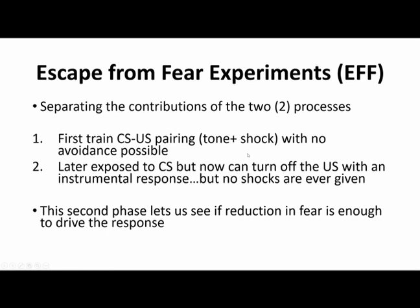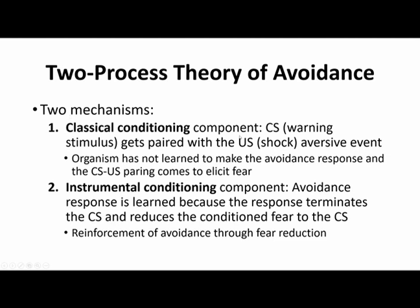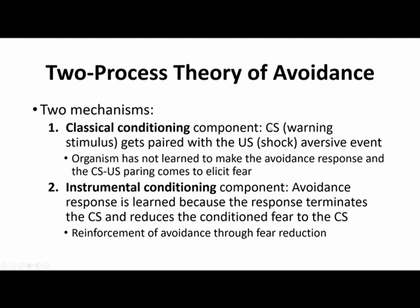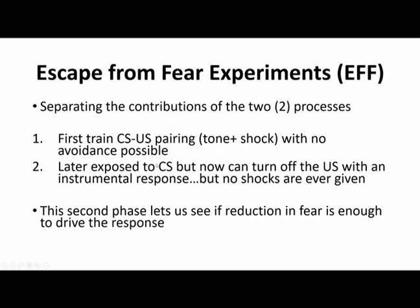These experiments are set up to separate the two contributions of the two processes. The first step looks the same as normal: train a CS-US pairing — associate a tone with a shock — but in this instance there's no avoidance possible. The presentation of a tone is always followed by a shock and there's no way to escape or avoid experiencing it. You're just learning there is a link between that tone and shock. The CS is paired with the US and we come to elicit fear — the conditioned stimulus elicits a fear response because of that pairing.